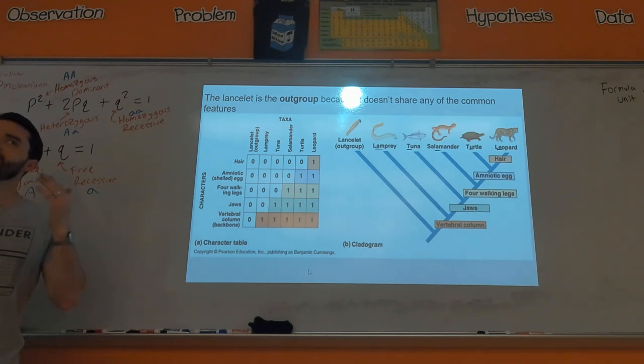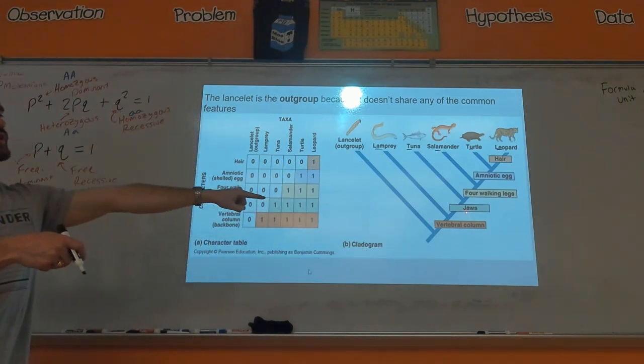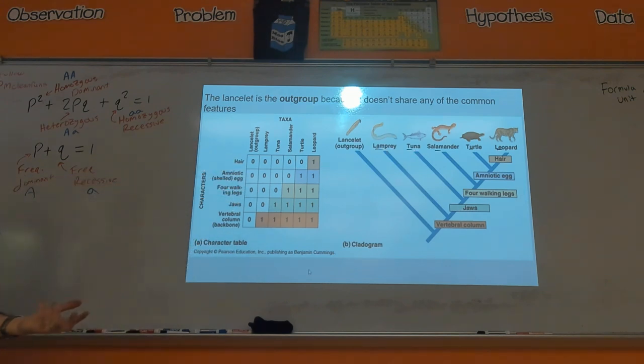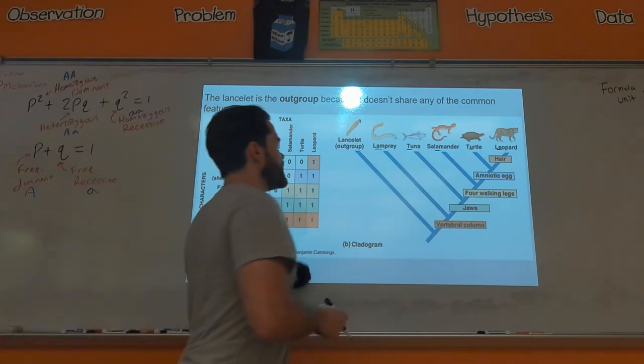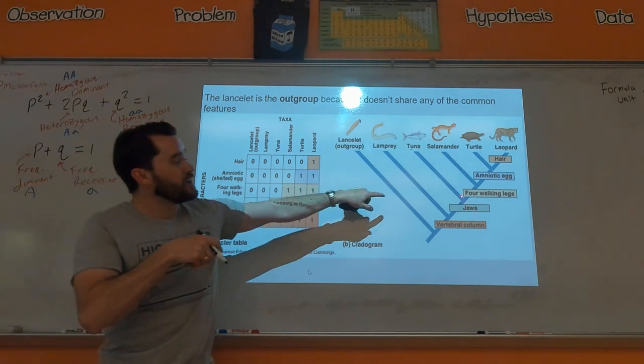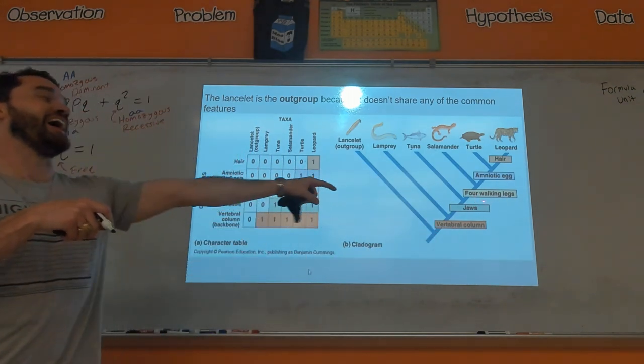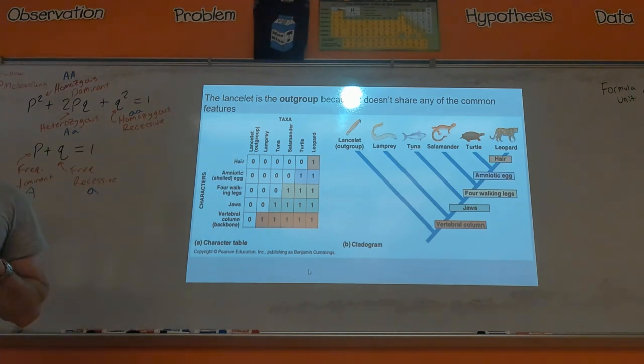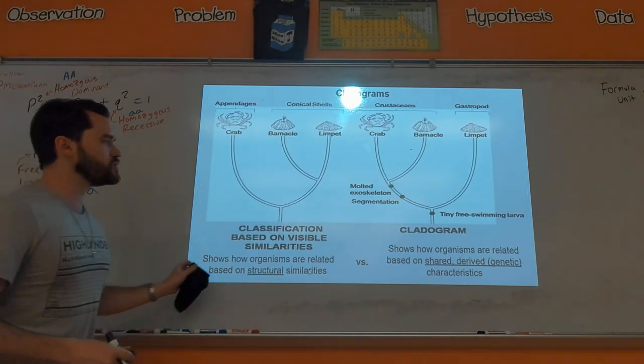Going on, jaws: what this would be saying is that only the tuna, salamander, turtle, leopard—they are the only ones that evolved jaws. The lamprey and the lancelet, they don't have jaws. Same thing with the four walking legs. So kinds of questions they could ask you: what features does the tuna not have? Yeah, good. So the tuna, because the tuna is below these three traits, the tuna does not have the walking legs, the amniotic egg, or the hair. That can be a little tricky, I think, to answer when they phrase it like that, so make sure you understand how to answer if they phrase it what do they have or not have for different organisms.